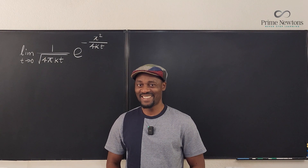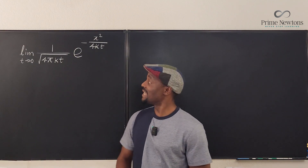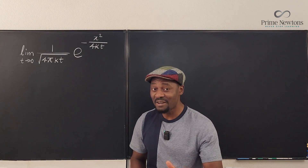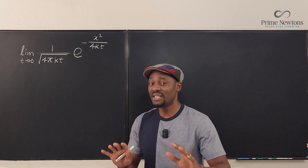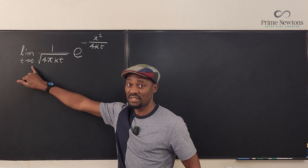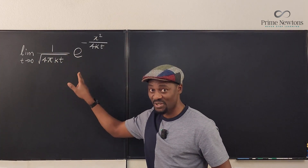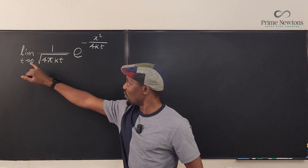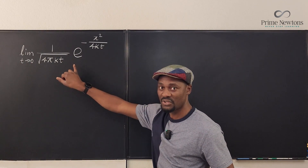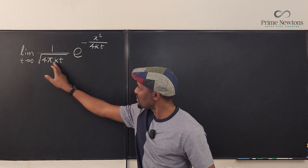Welcome to another video. We will be taking the limit of this function as t approaches zero. Remember that when you take limits and your variable is approaching a finite point, your first move must be to plug in the finite point into the function. So t is approaching zero — let's plug in zero and see what happens.